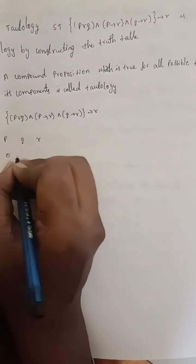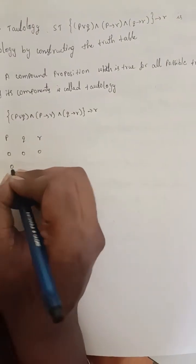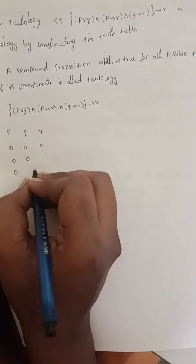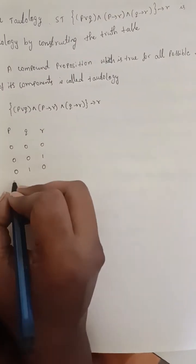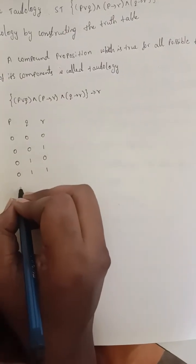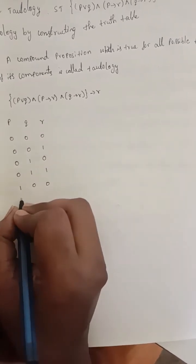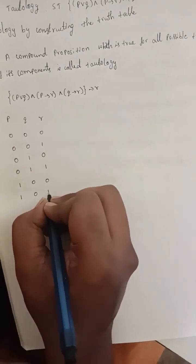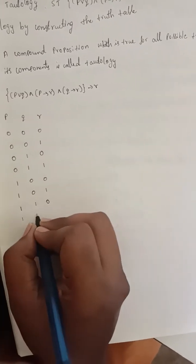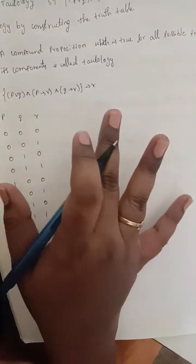The conditions are: P false, Q false, R false. P false, Q false, R true. P false, Q true, R false. P false, Q true, R true. P true, Q false, R true. P true, Q true, R false. P true, Q true, R true. These are all the conditions.